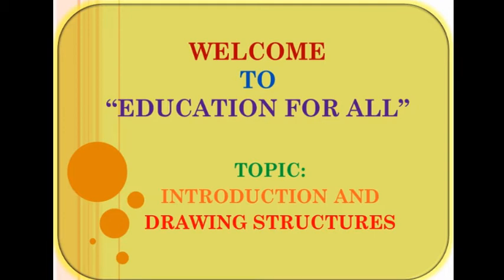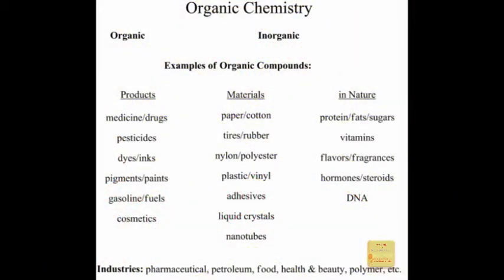This is our first lesson in organic chemistry, and we'll start by defining what it means to be organic. When these terms were starting to be developed hundreds of years ago, things were being classified as either organic or inorganic. Organic was described as something that came from living things — plants and animals — and inorganic was everything else, like rocks, minerals, metal, and glass.